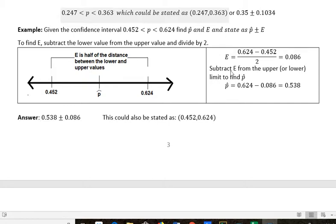We want to then subtract E from the upper value. You can subtract it from the lower one, you just get a negative number, but I think it's easier to think of taking the upper value 0.624 and subtracting the E that we just found. That tells us what our p-hat is: 0.538. If we add 0.086 we get here, and if we subtract 0.086 we get there.